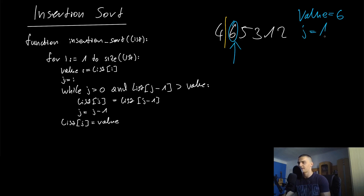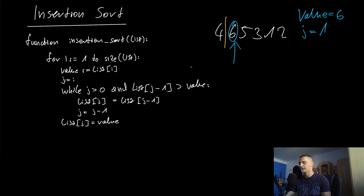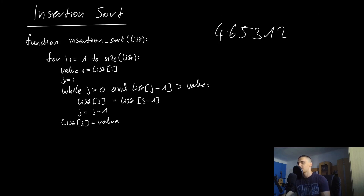We also have a counter j that starts at the current index and counts down. We have a while loop — not a for loop — and we say: while j is greater than zero (important because we decrease j with each iteration) and while the element at index j minus one is larger than 'value', we shift values to make room. In this first case, j is one and list[j-1] which is four is not larger than six, so six is already in the right place. We just shift the boundary to include six in the sorted section.